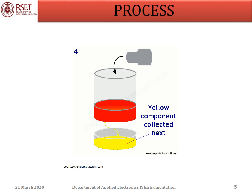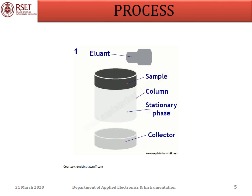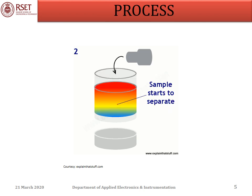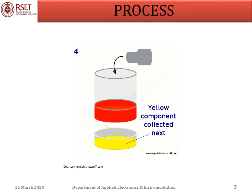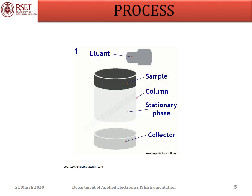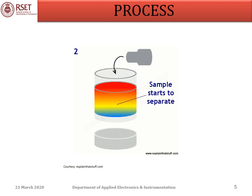In the figure, we see the column containing the stationary phase, loaded with the sample at the top. An eluent or solvent is added to the sample. It splits into its components — let's say they are colored red, yellow, and blue. These will travel at different rates and emerge one at a time at the bottom, where they can be collected in different containers.